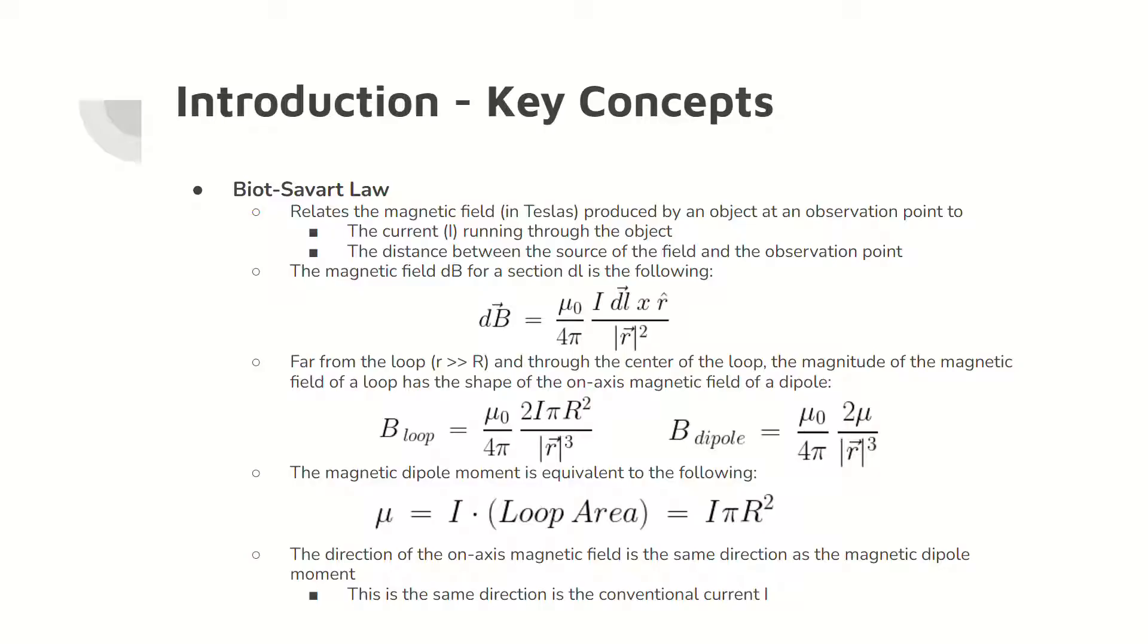Far from a loop with current I and on the line passing through the loop center, the magnetic field is similar to the magnetic field of a dipole on the dipole axis. This magnetic field is related to the distance and the magnetic dipole moment, which is the product of the object's area and current.